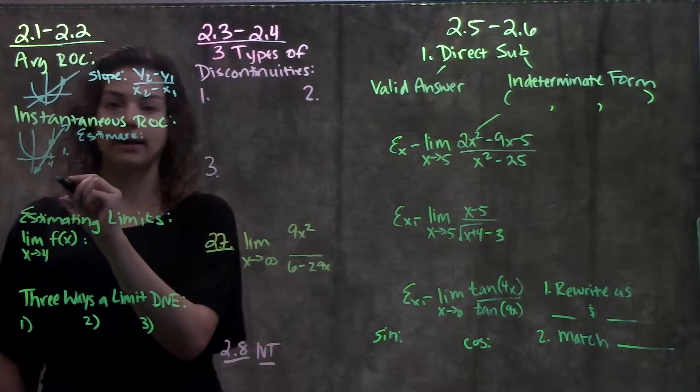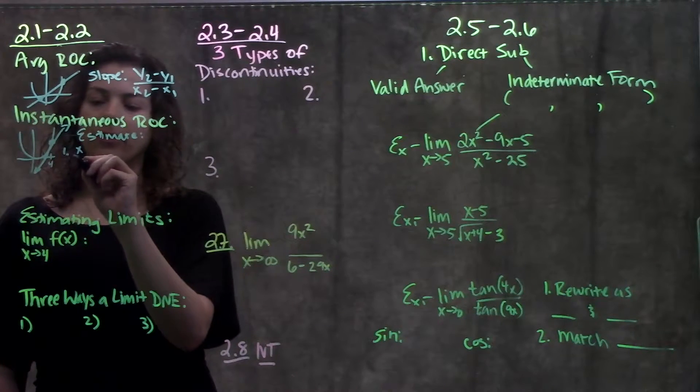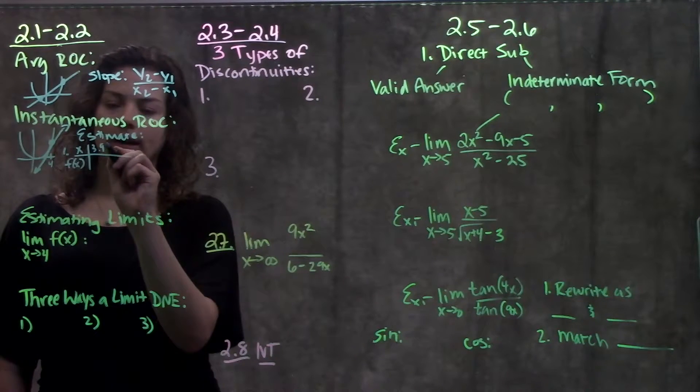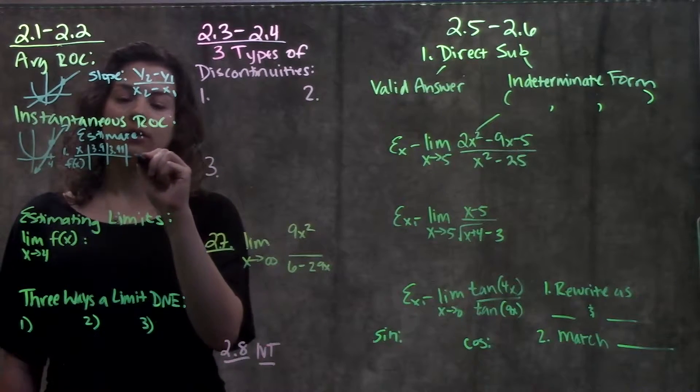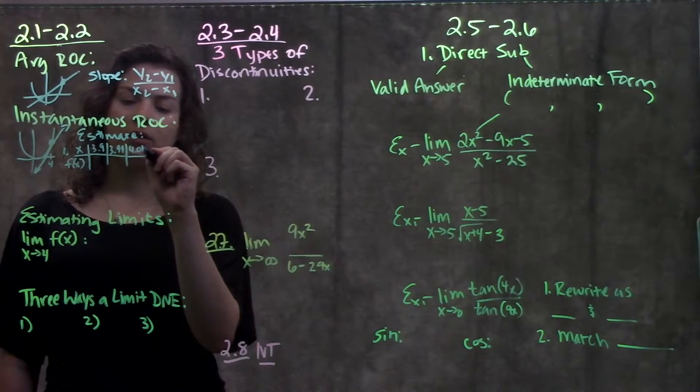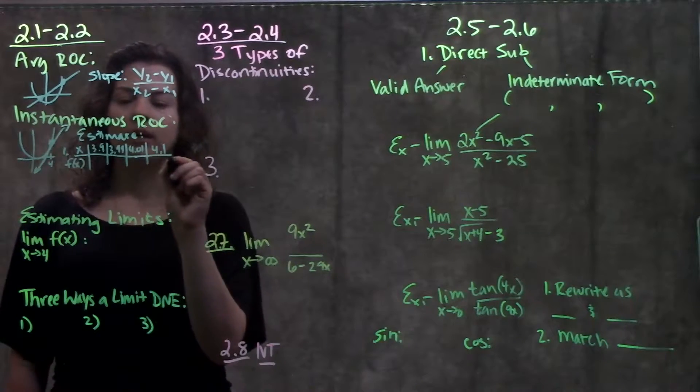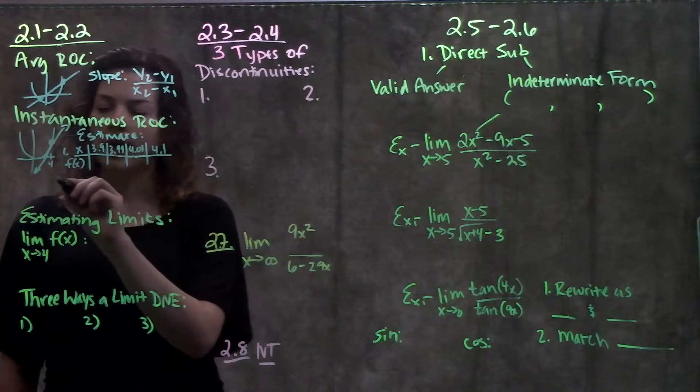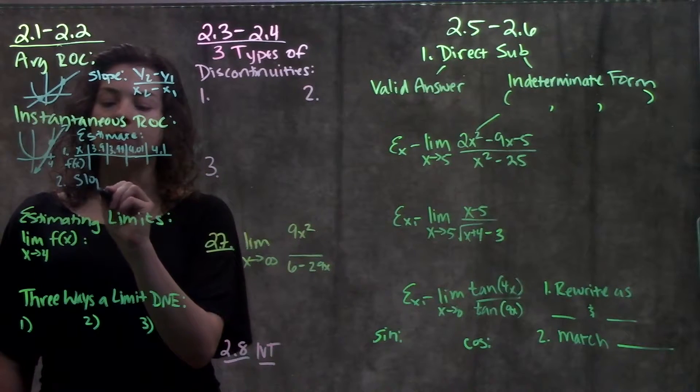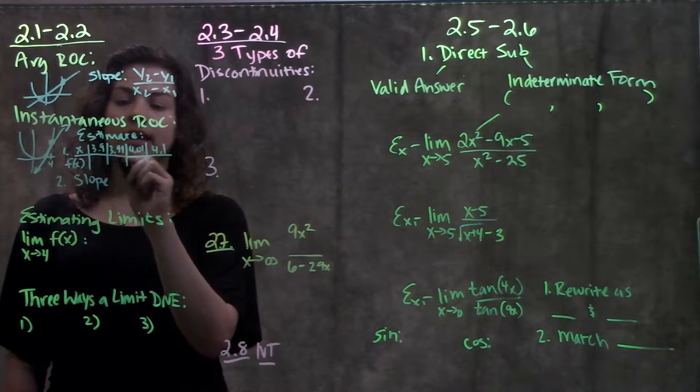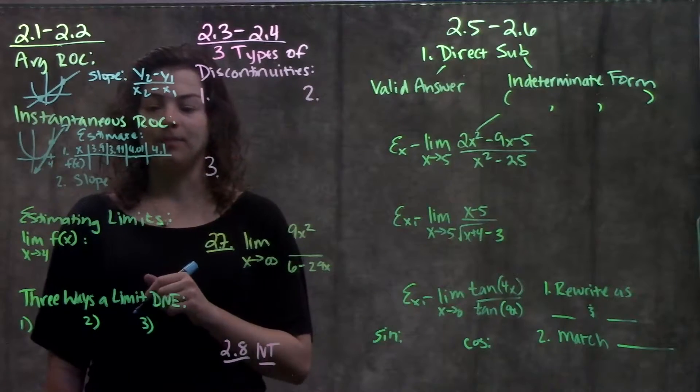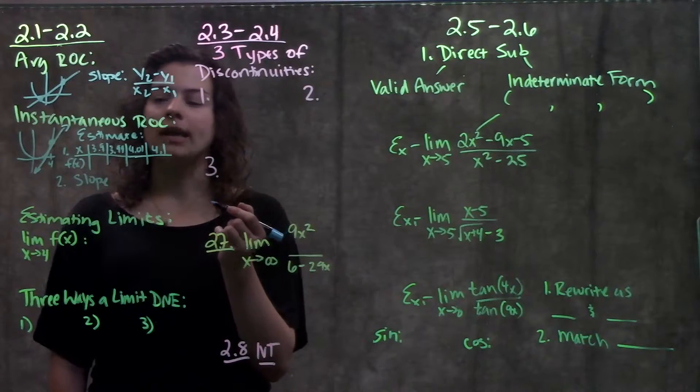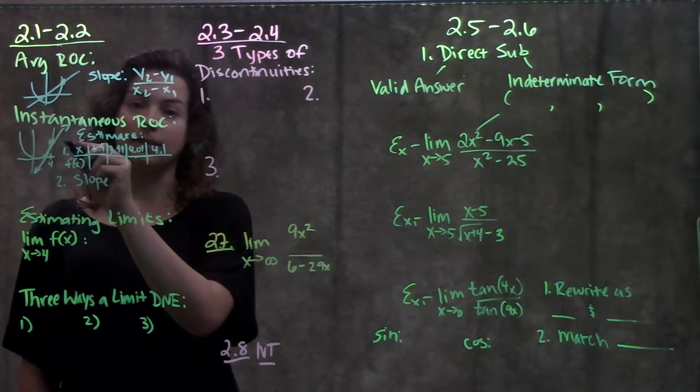We estimated it by first making a table. Let's just say this is the point x equals 4. Our first step was we plugged in x values closer and closer to 4 from both sides, maybe 3.9, 3.99 from the left, and coming closer to the right, maybe 4.01, 4.1, and so on. We plugged these x values into our function, got our y output values. Our second step was we found the slope between these x values that we plugged in and the point that we're interested in. By finding the slope between all these points, we're able to see a pattern and get a pretty good estimate of what the instantaneous slope is at this specific point.